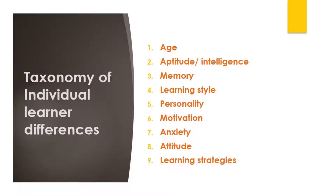Thus, the focus of research has taken a drastic shift from trying to answer the question 'what is a good teacher' to the question 'what is a good learner.' Since the 1970s, the search for qualities of good learners has led to identifying several factors that contribute to these observable learning differences. Several taxonomies have been presented and a considerable number of factors contributing to individual differences have been listed. In this video, we are going to talk about the most commonly stated individual differences.